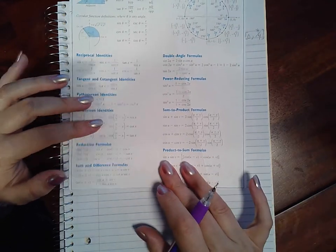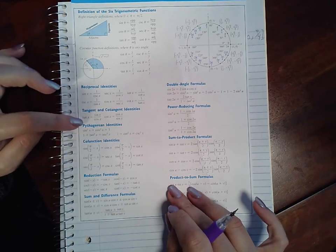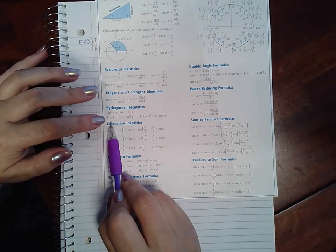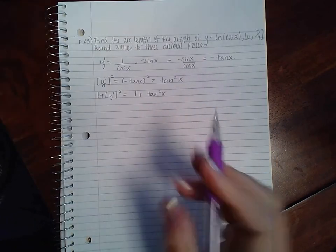But if you notice here... There we go. Here we go. Pythagorean identities. Notice that 1 + tan² is actually equal to sec².